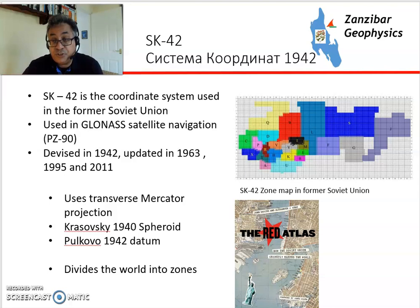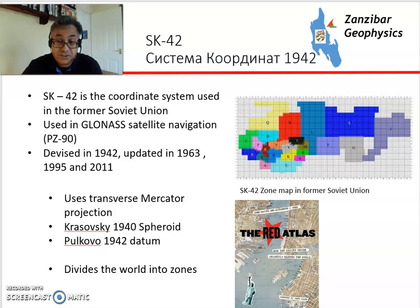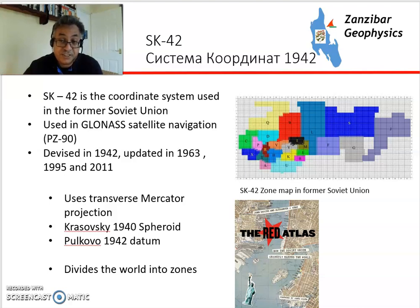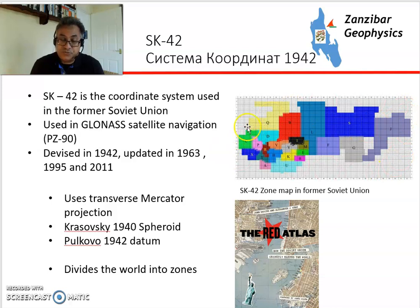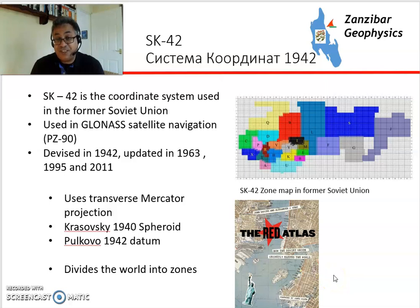Working in the Soviet Union, you would use SK-42, a system codified in 1942, developed in the 1940s during the Great Patriotic War against the Nazis, and used since then with various variations. GLONASS — the Russian equivalent of GPS — uses a datum called PZ-90, a transverse Mercator projection, the Krasovsky 1940 spheroid, and the Pulkovo 1942 datum, also dividing the world into zones. The Russians did a lot of mapping around the world for their general staff, and there's an interesting book called the Red Atlas where those maps were declassified, so you can see a map of your area in Russian.